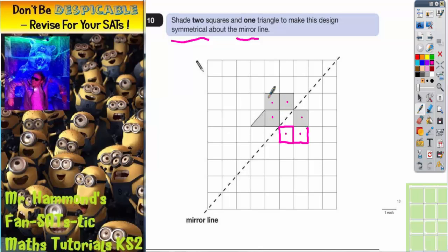Another way of thinking about it is from this square to the mirror line, there's half a triangle. So we need to leave half a triangle on the other side and then do the square. So these three squares are now all symmetrical.